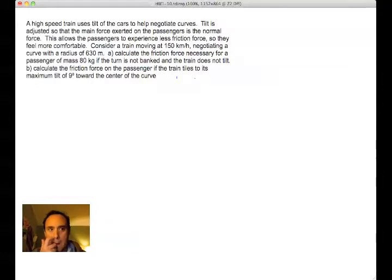In this particular problem, we're looking at a train, a high-speed train, that uses the tilt of the cars to negotiate curves. This tilt's adjusted such that the passengers really just feel a normal force, and it allows the passengers to feel less friction sliding across the seat.